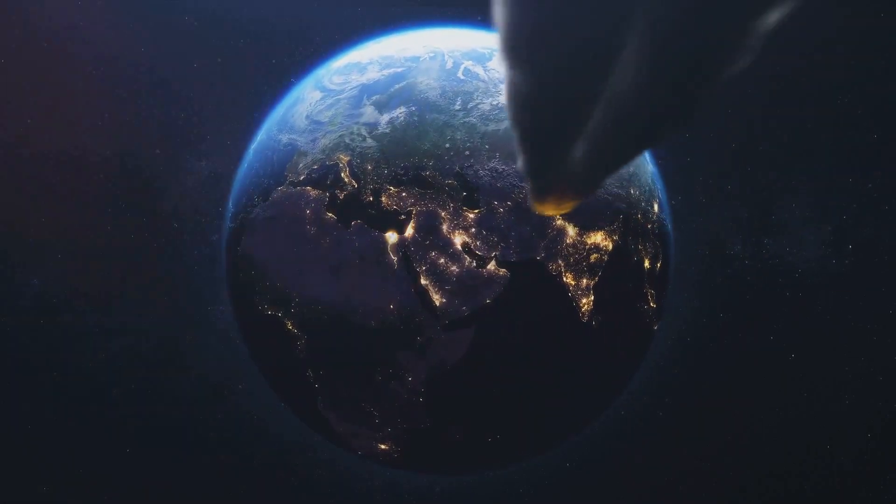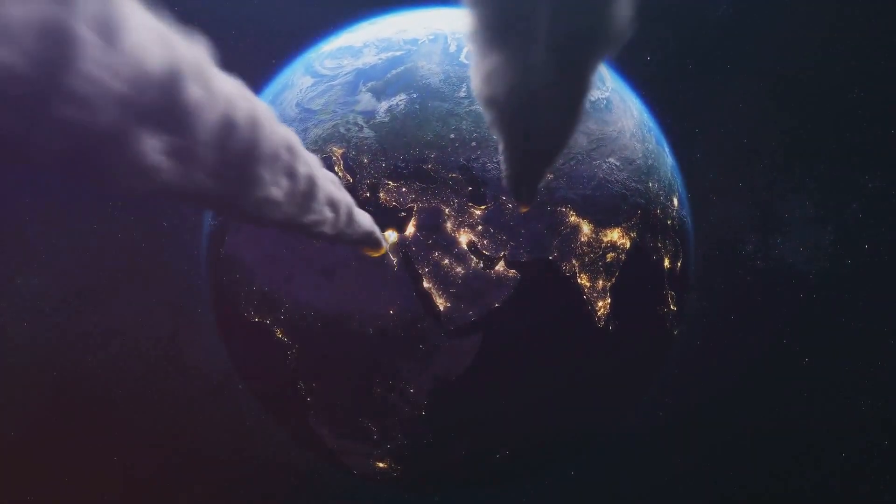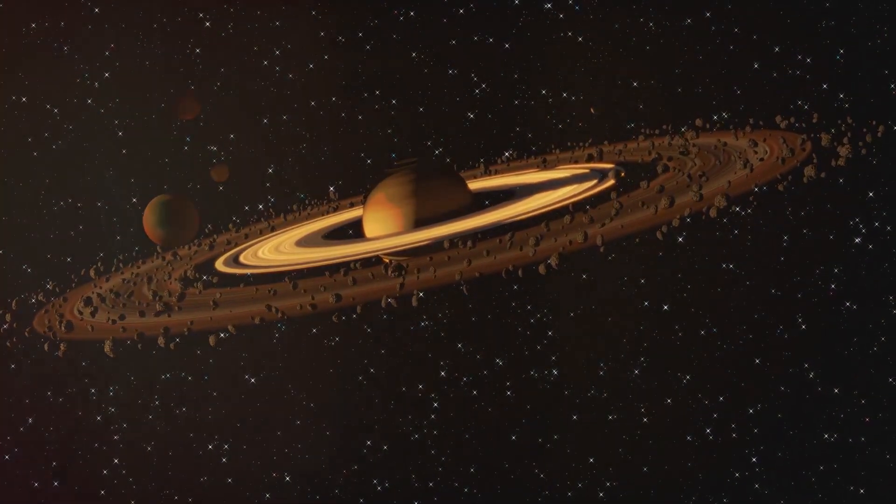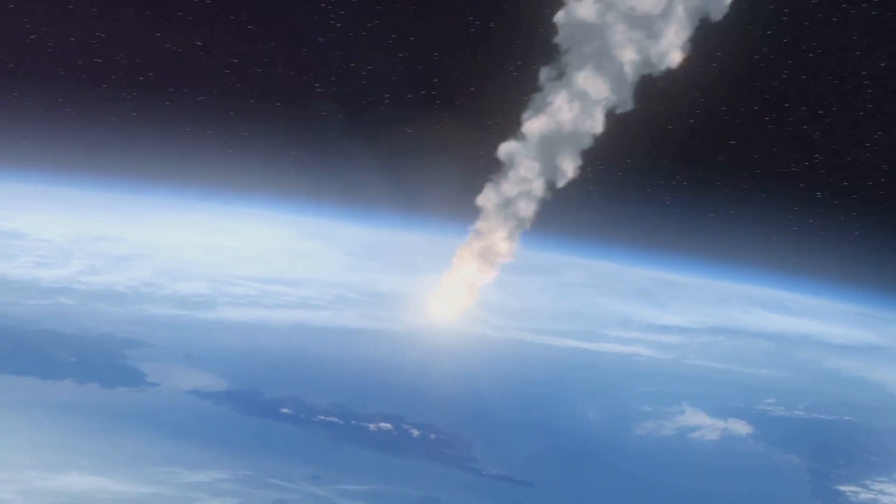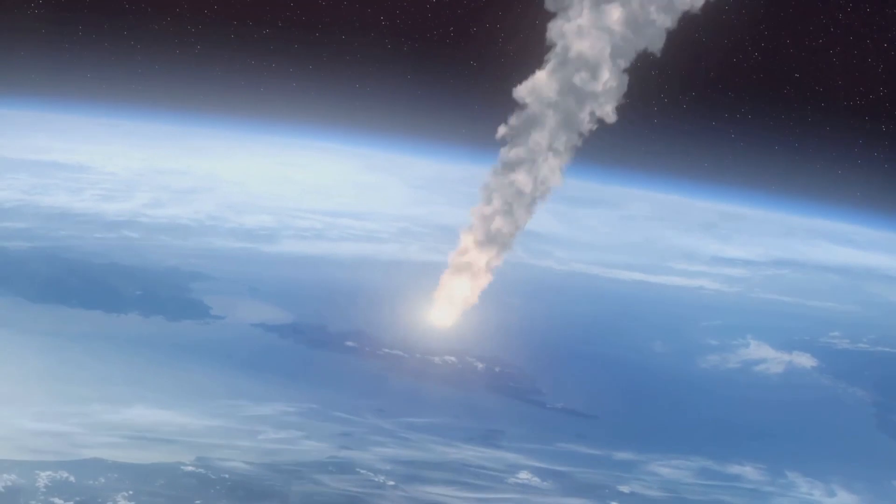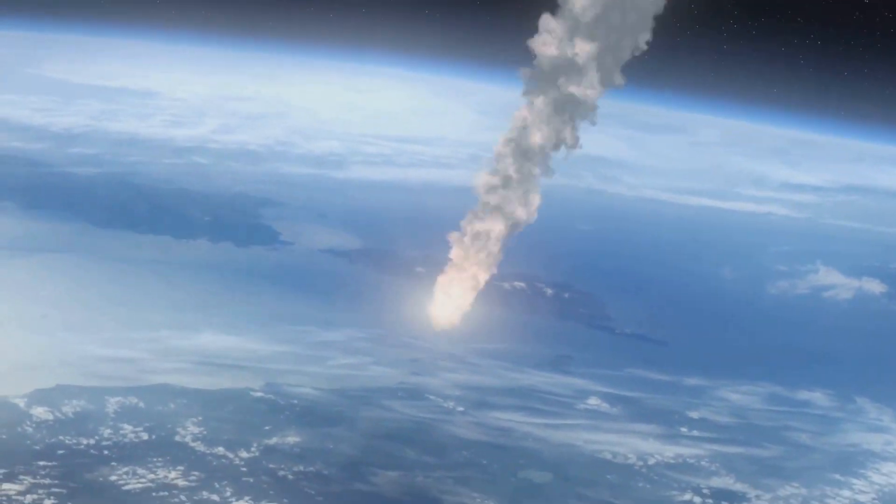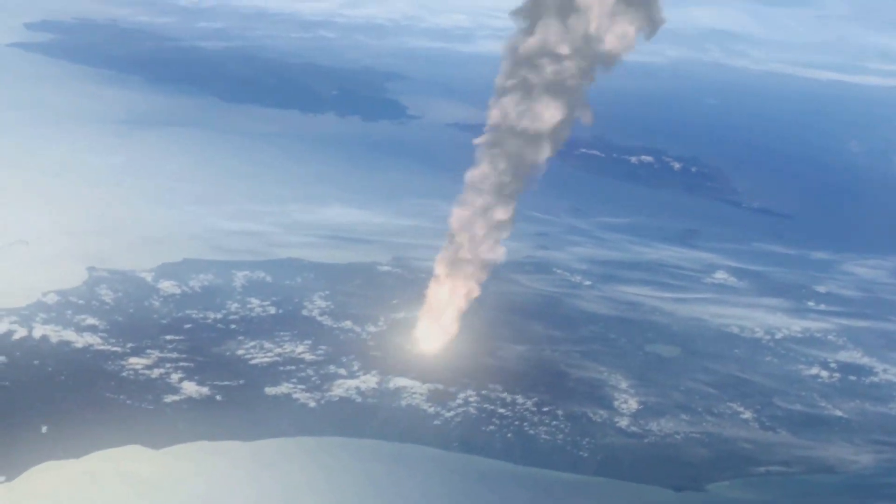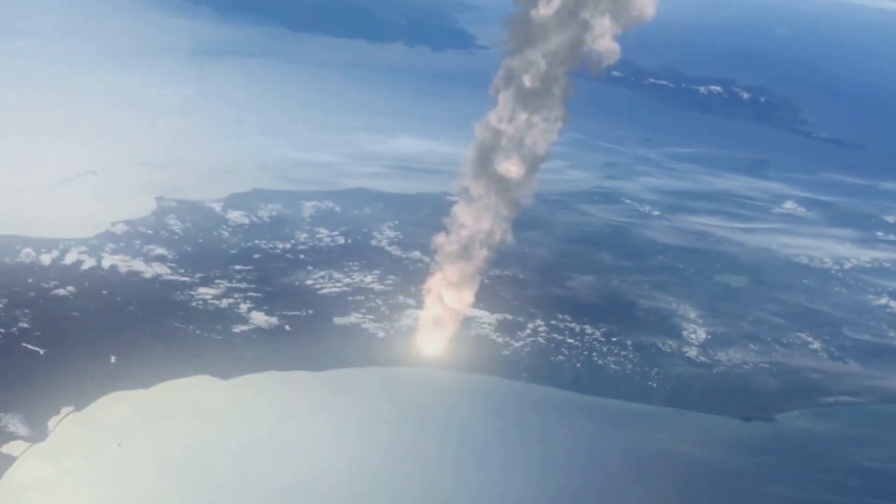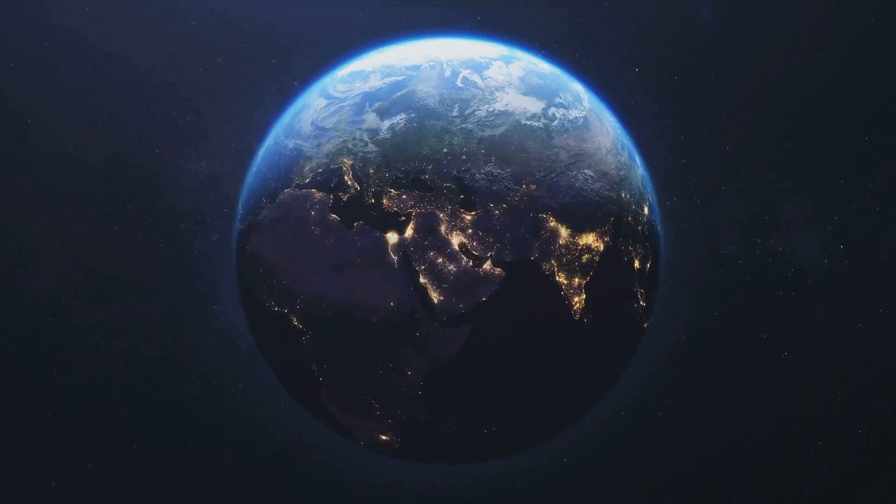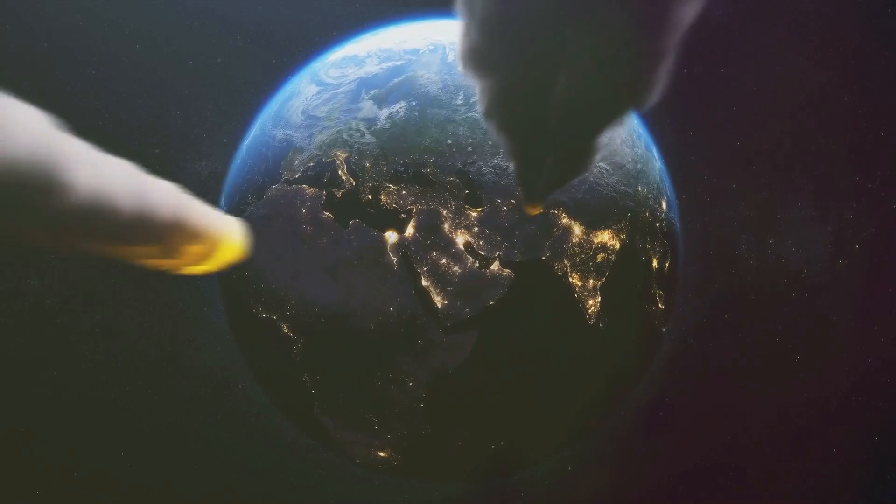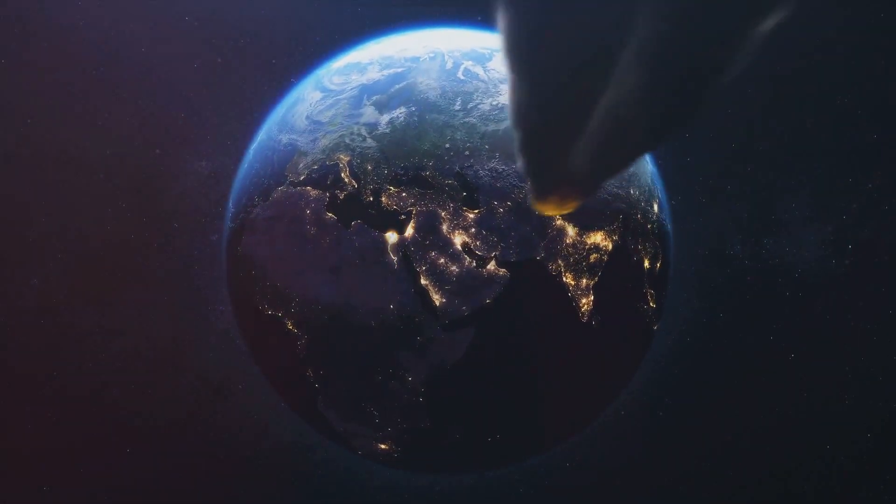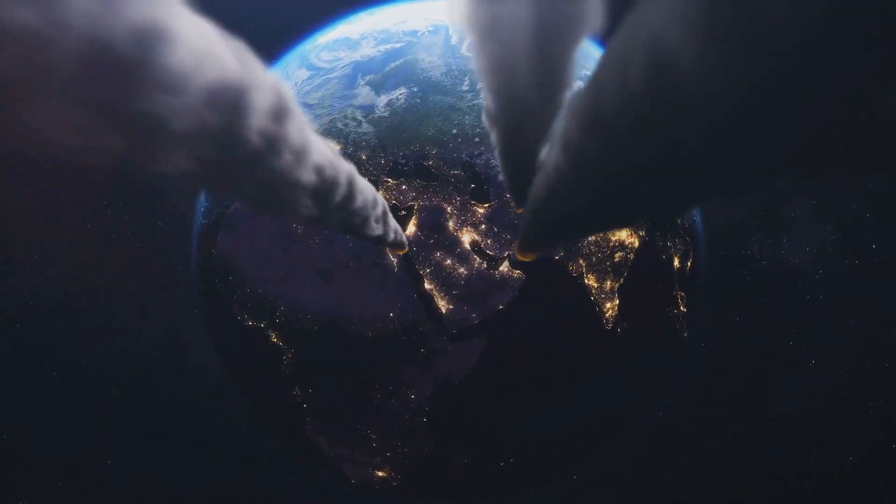Next, let's consider time scales and the rarity of collisions. The universe operates on a timeline that is vastly different from our human experience. While small meteoroids frequently burn up in Earth's atmosphere, creating those mesmerizing shooting stars we all love, large asteroid impacts are rare. These small meteoroids are like cosmic fireworks, harmless and beautiful. These significant collisions happen over long time scales, hundreds to millions of years. The last major impact that had a significant effect on Earth was millions of years ago.